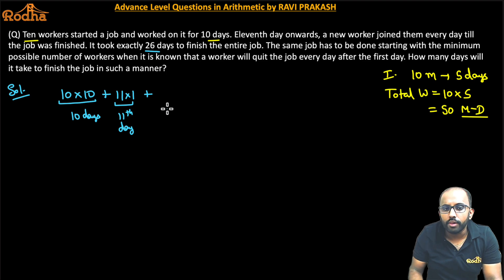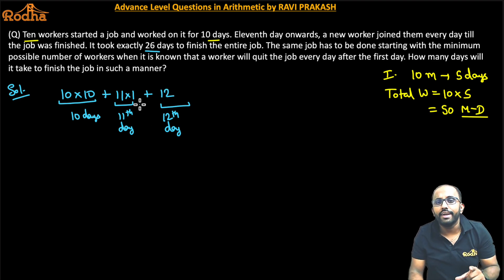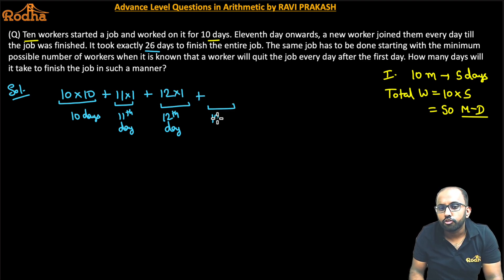Plus what would happen in 12th day? So what's the 12th day? One more worker would join them. So 12 workers are there. And they worked for one day. That is 12th day. So 12 into one. Then 13th day, what's the same way? So 13th day, there must be 13 workers. And they worked for one day. That is 13th day. Similarly, it should go till 26 workers worked for 26th day. Okay.